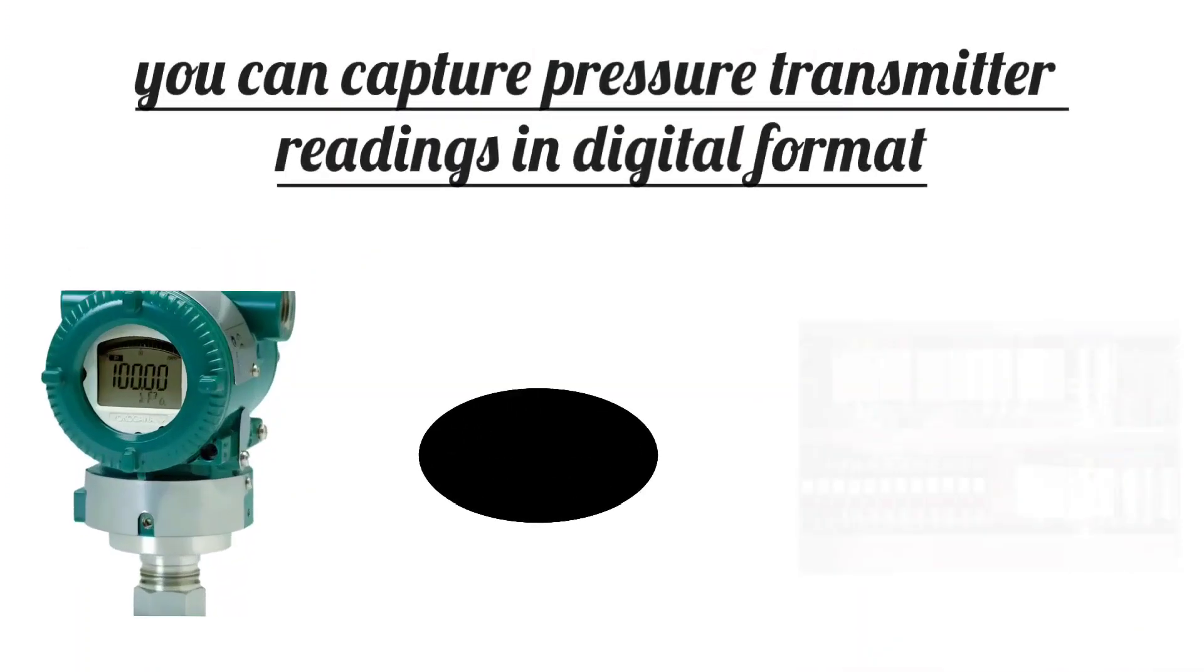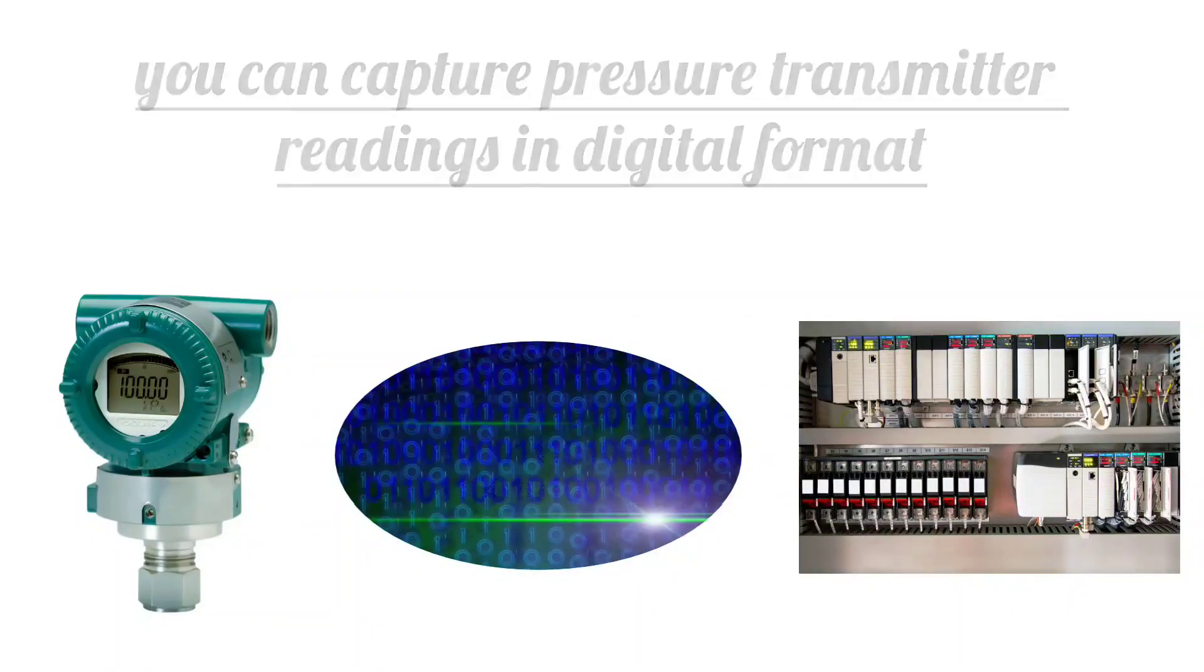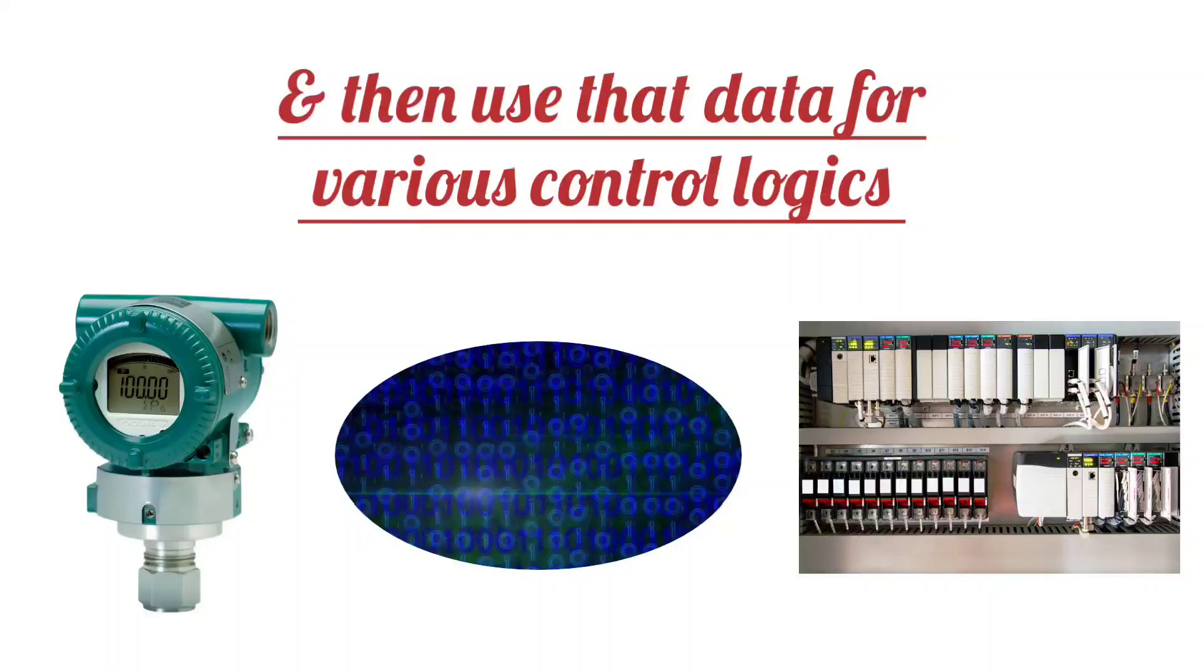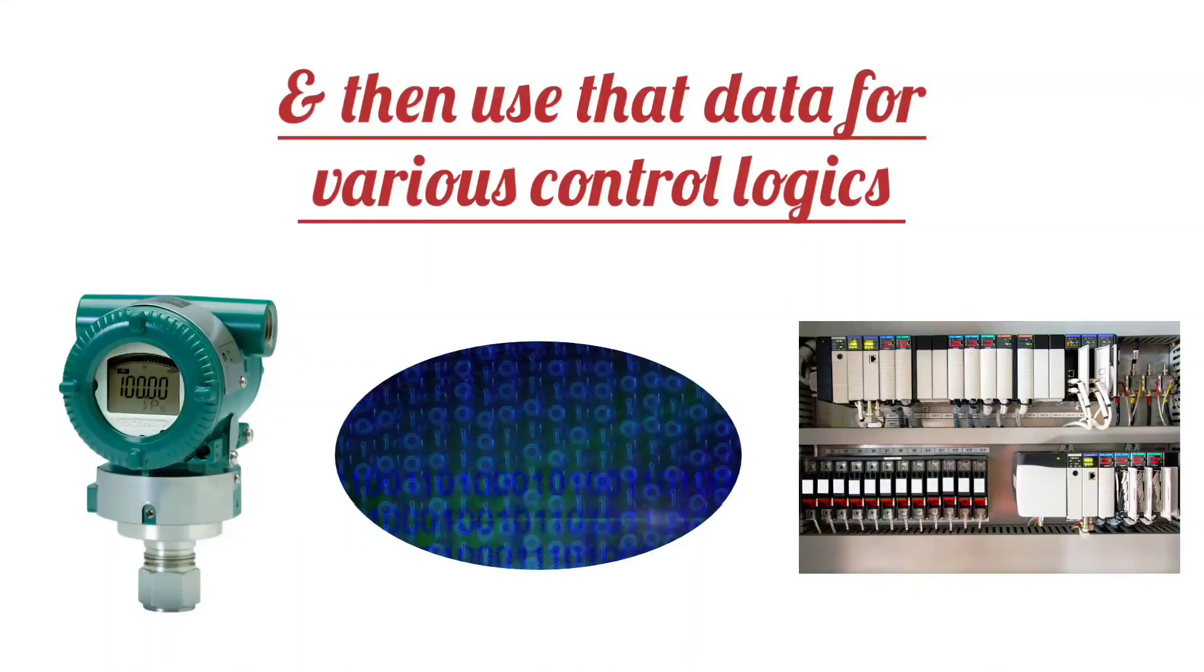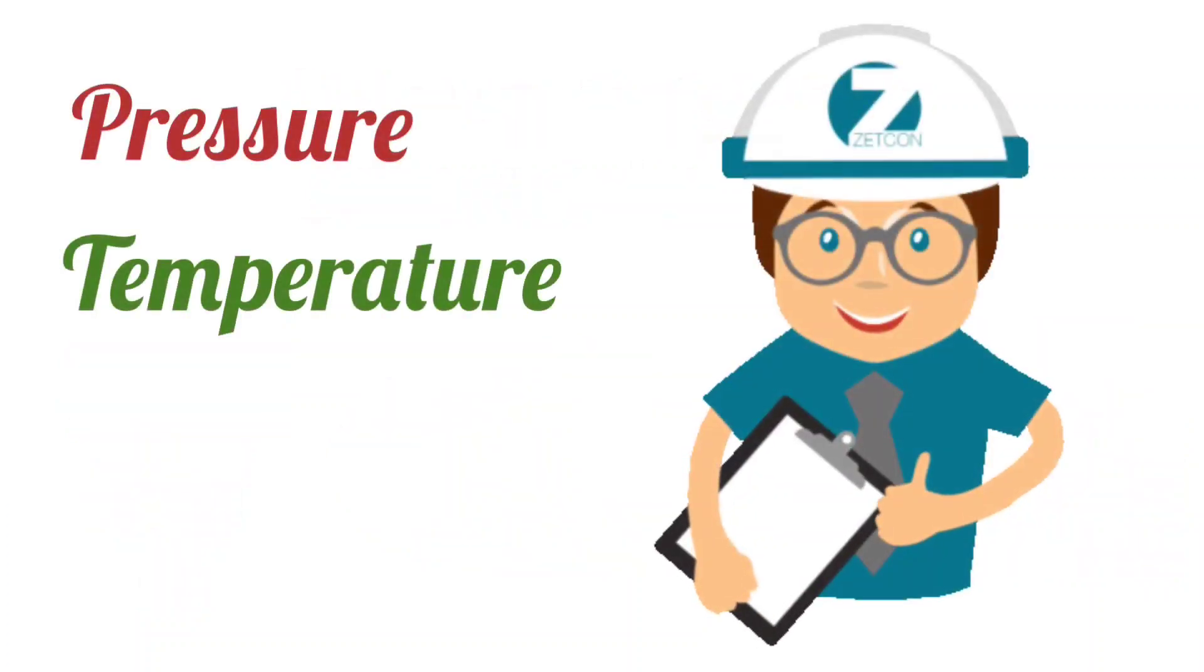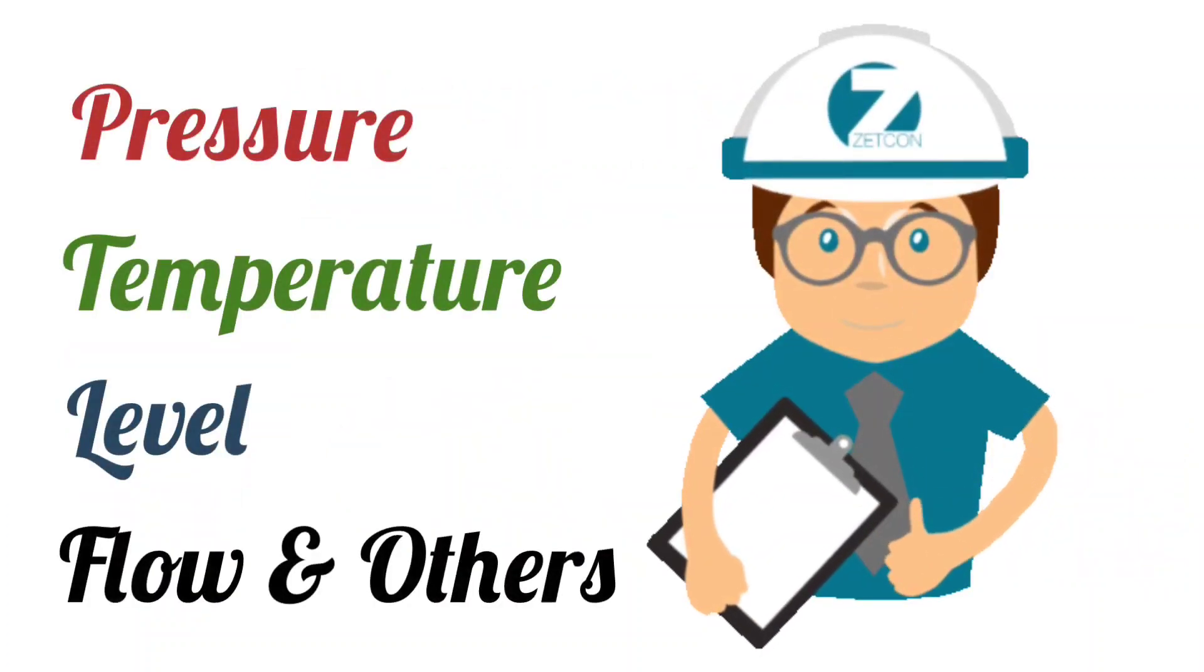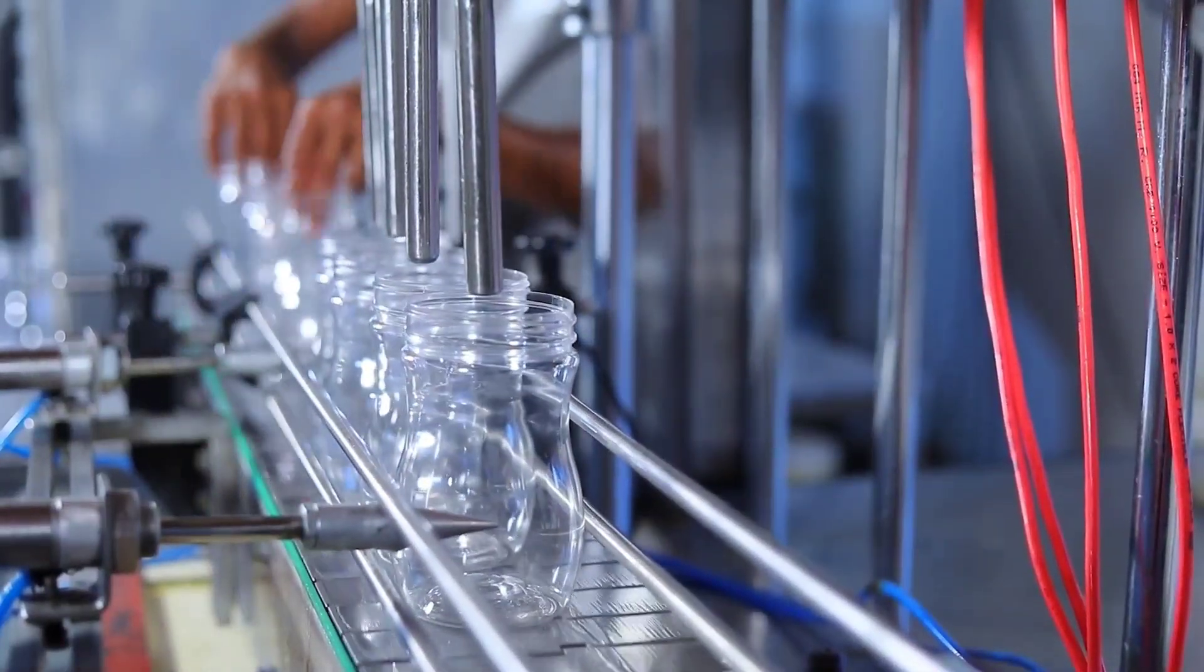This means that by using a PLC, you can capture pressure transmitter readings in digital format and then use that data for various control logics. This allows you, by detecting changes in pressure, temperature, level, flow, or other parameters, to control automation processes.